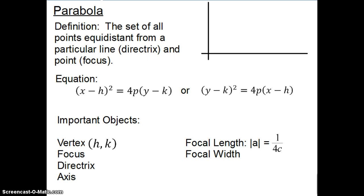The directrix is a line — it could be a horizontal line, it could be a vertical line, or it could actually be a slanted line, even though we're not going to do any of those. I'm going to draw that on my graph and dot it much like we do an asymptote, because it's not really part of the graph — it's just an important object. I'll label this the directrix.